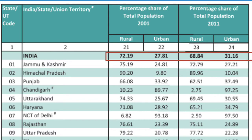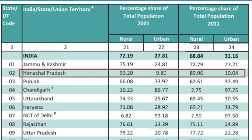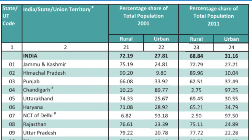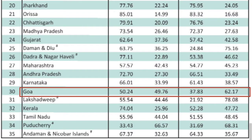In the Census of 2001, total rural population was 72.19 percent and urban was 27.81 percent. In the Census of 2011, there is a slight change — urban population has grown compared to 2001, likely due to migration over the decade as people move from rural to urban areas for employment. State-wise, Himachal Pradesh recorded the highest rural population in both censuses — 89.96 percent in 2011 — while Goa recorded the lowest rural population among all states.